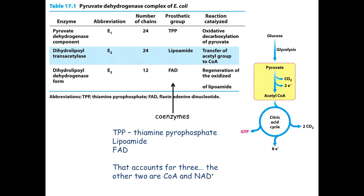E1 has 24 chains — definitely a quaternary structure, a 24-mer. E2 similarly has 24 separate chains, and E3 has 12 chains. This is an enormous complex. Some cofactors involved are TPP (thiamine pyrophosphate), lipoamide, and FAD — we've seen FAD before. The other two you've already seen: CoA from the previous slide, and NAD from our discussion of coenzymes in general.